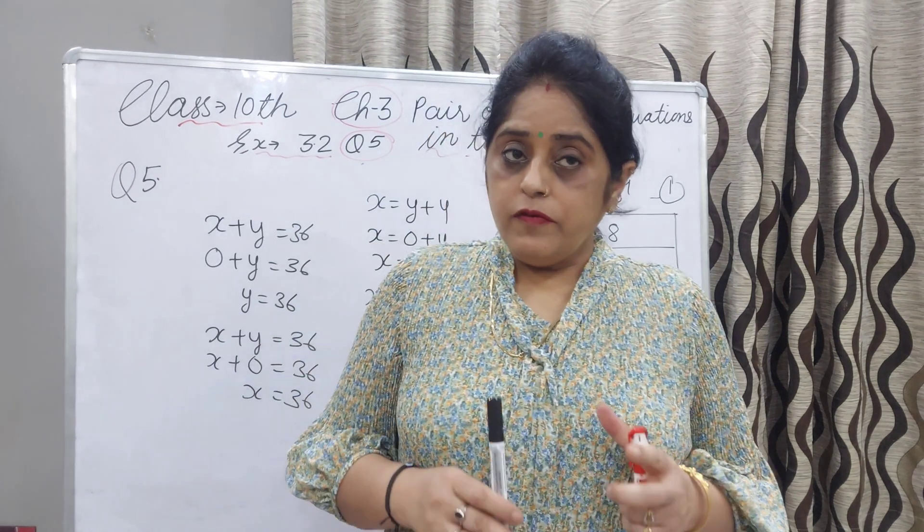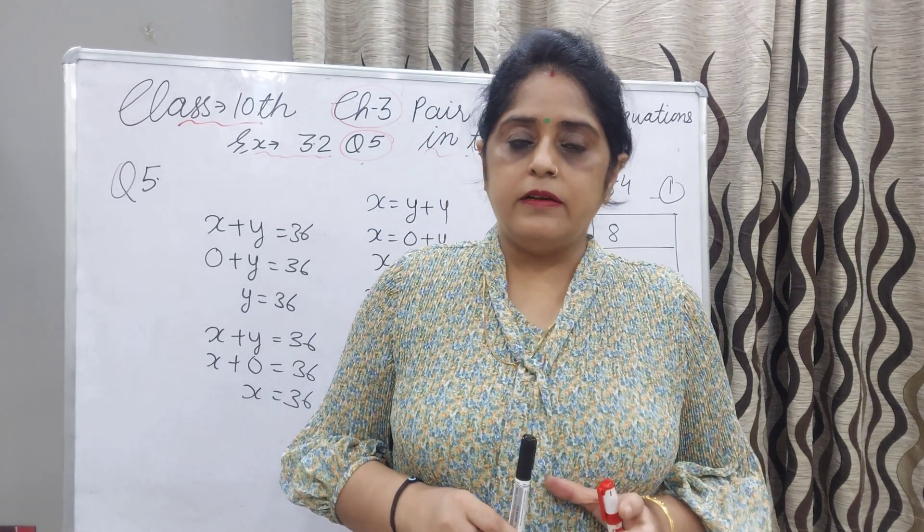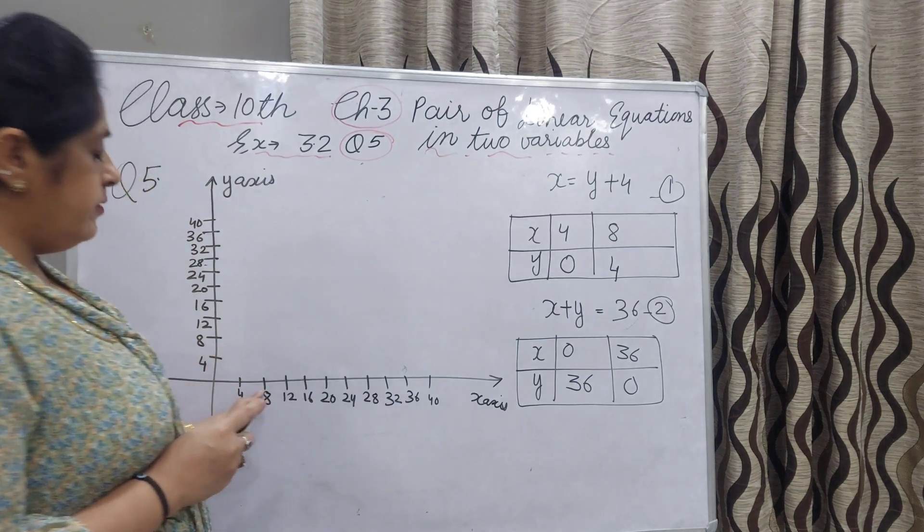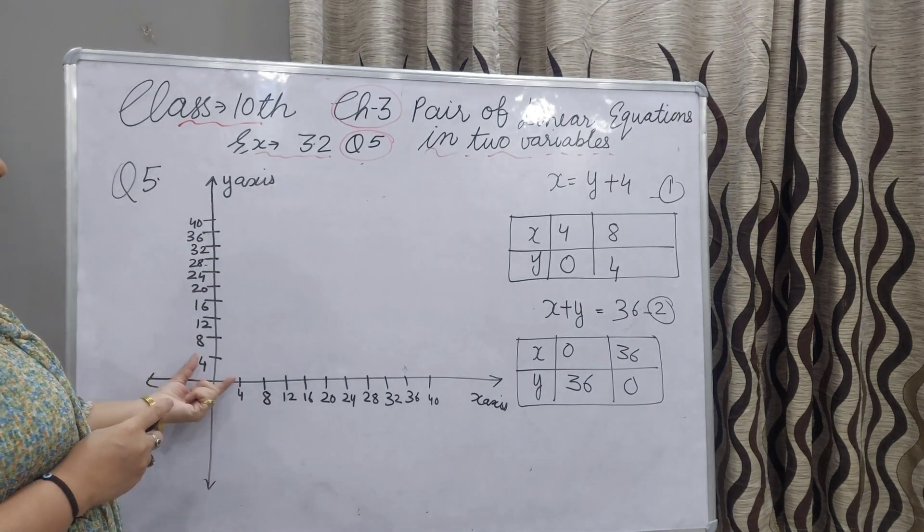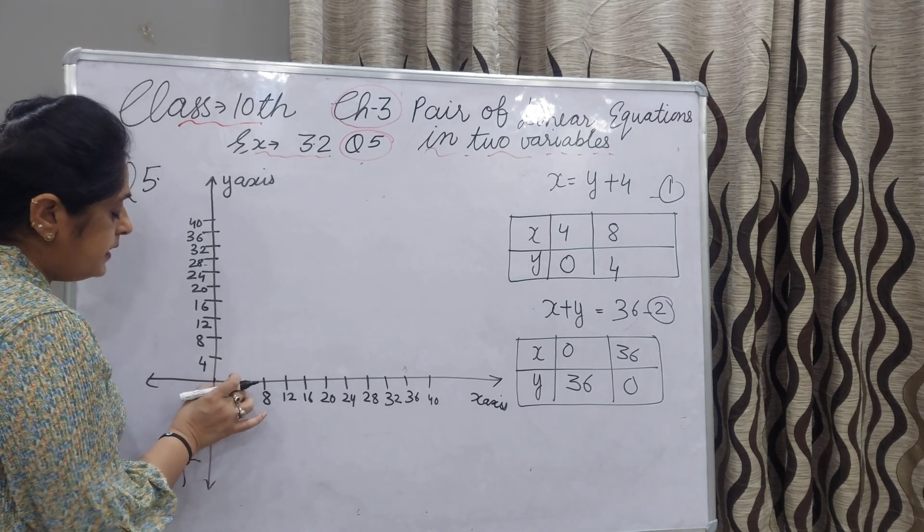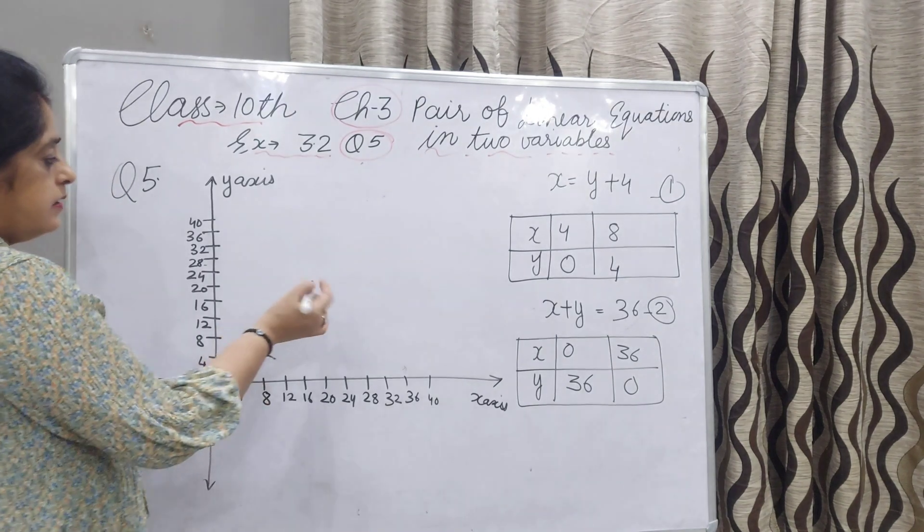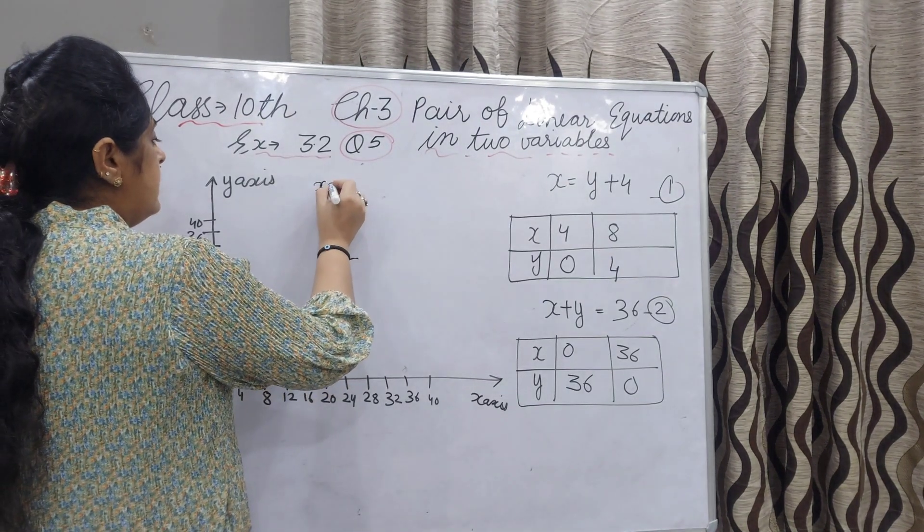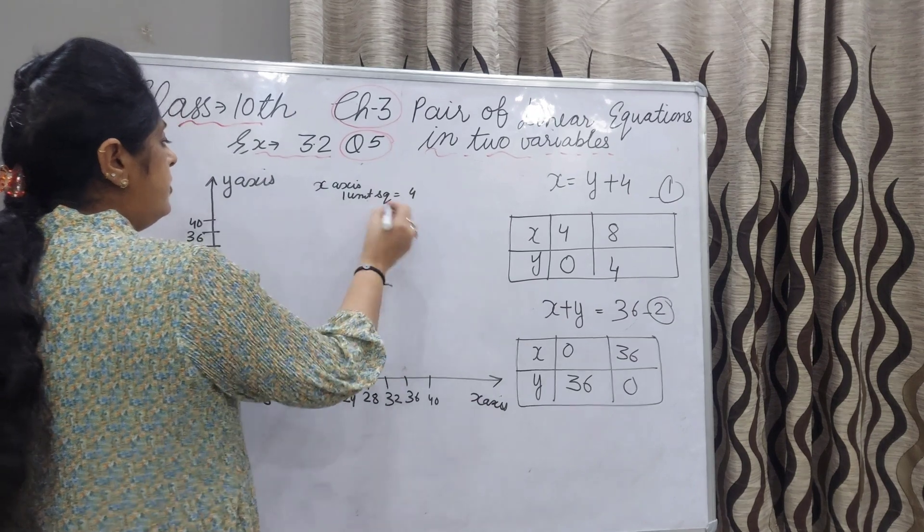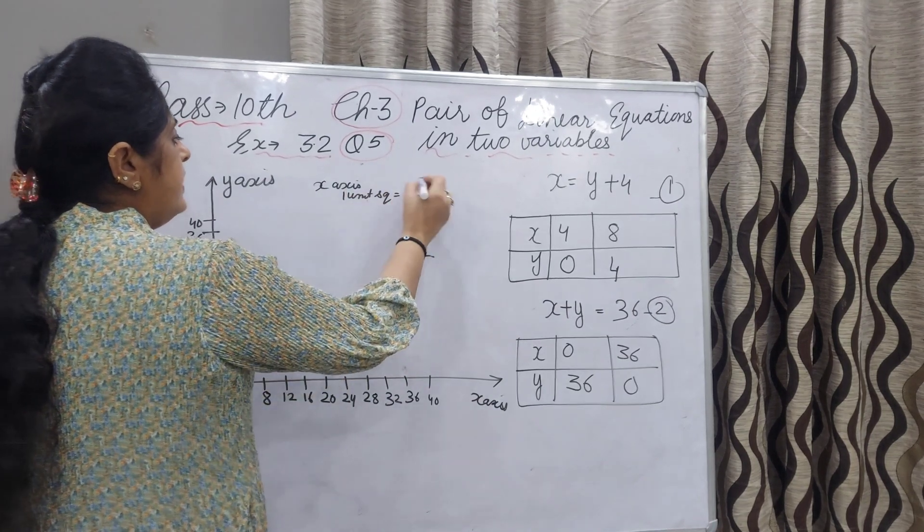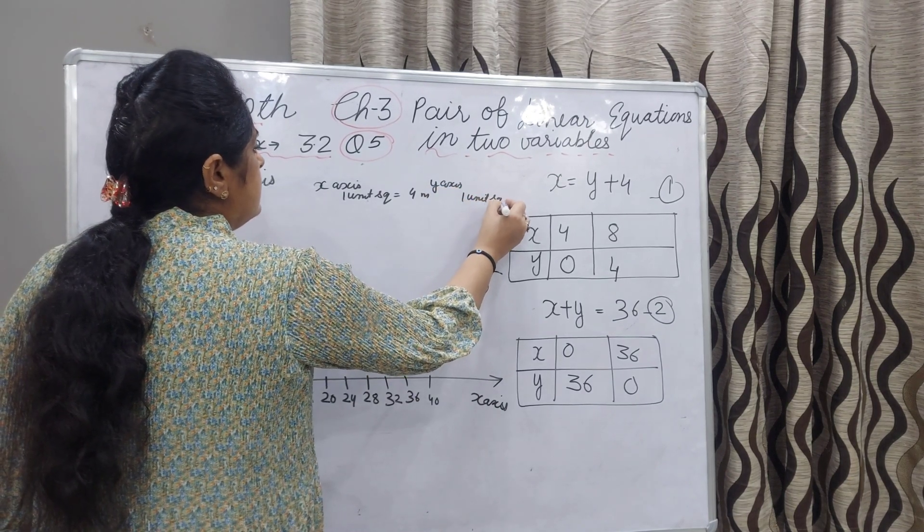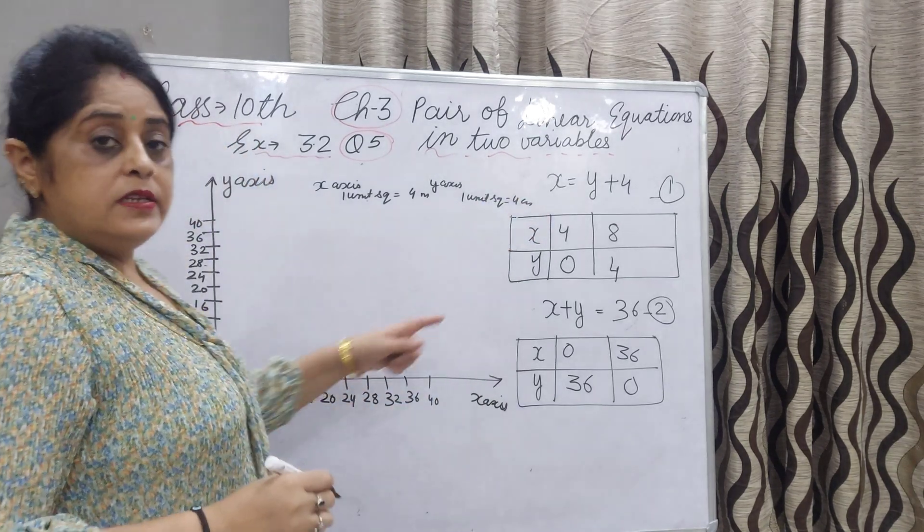Now when we want the solution, we have to make a graph. I have drawn x axis and y axis, both are perpendicular to each other. We have taken 1 unit square as 4. Each square unit we have taken as 4 cm. You can write here: x axis is 1 unit square equal to 4 cm, and y axis is also 1 unit square equal to 4 cm.